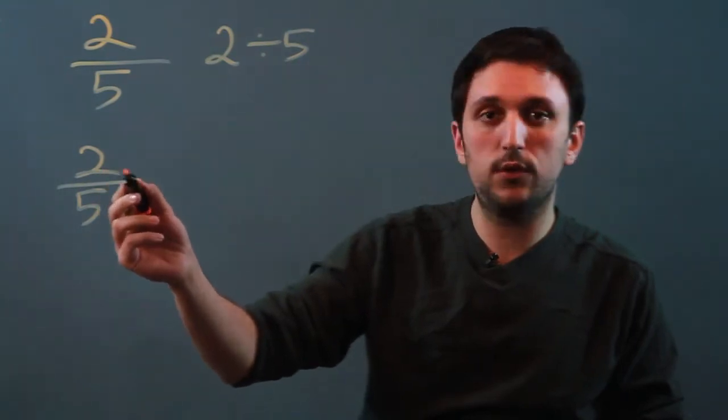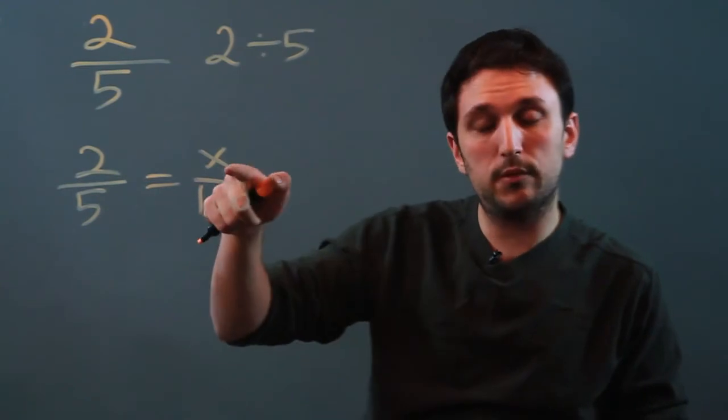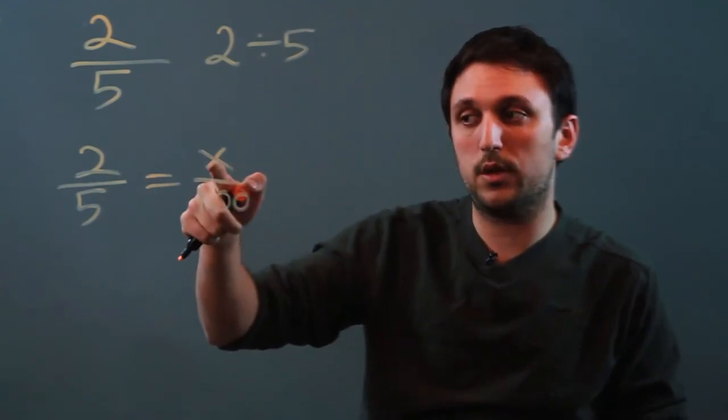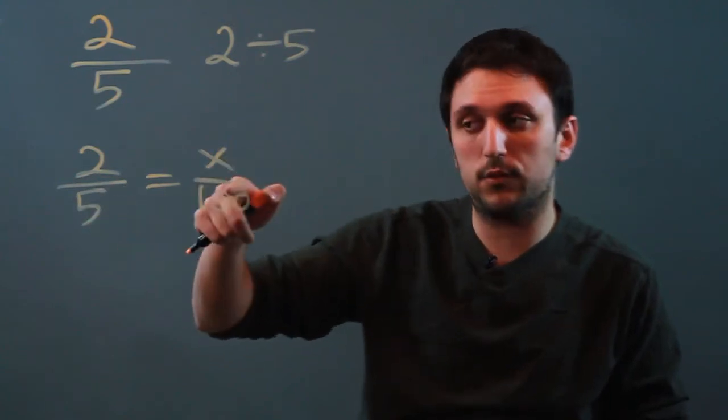The way that you can do that is you can set it equal to x over 100. And the only reason we're bringing x in is because we want to find what 2 would be over 100. If it's 2 over 5, it's something else over 100.